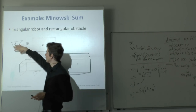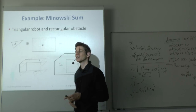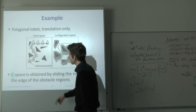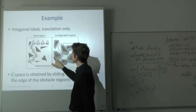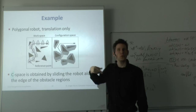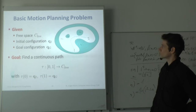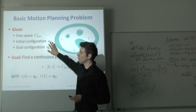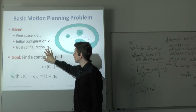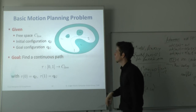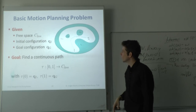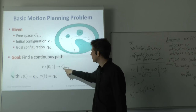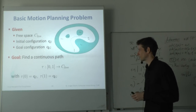This Minkowski sum approach works for translation; if rotation is also allowed, you'd get something like a disc at the end. Another example: given a polygon robot, inflate all obstacles by the robot's shape, then find a collision-free path through the resulting free space. Mathematically, the basic motion planning problem is: given an initial configuration from free space, a goal configuration, and a set of free configurations, find a continuous path from start to goal that only passes through free configurations.